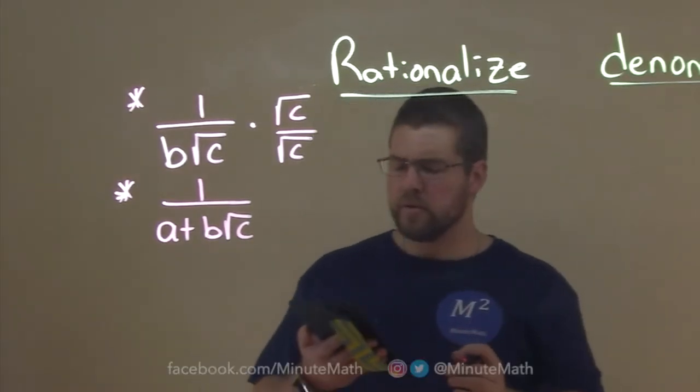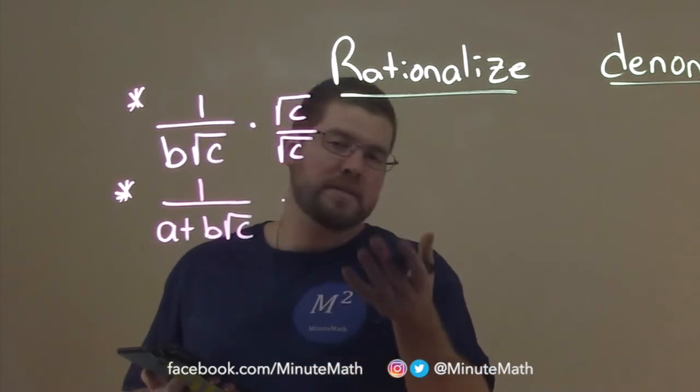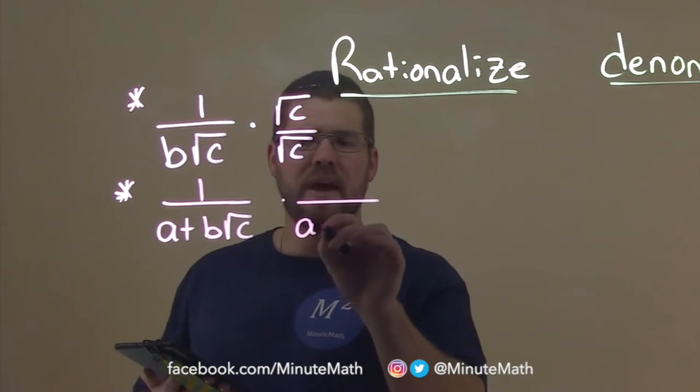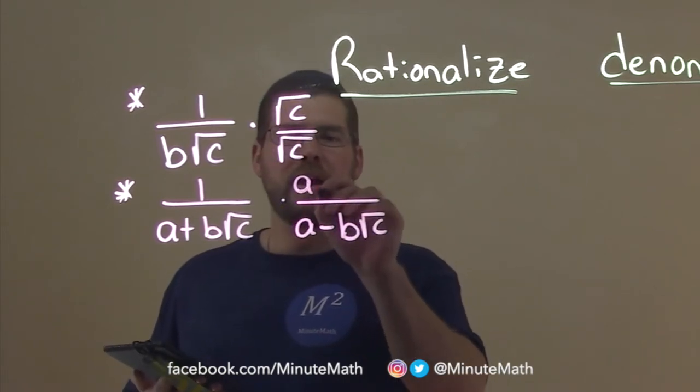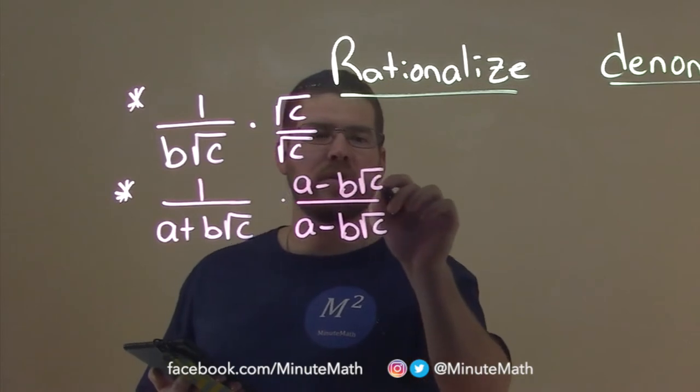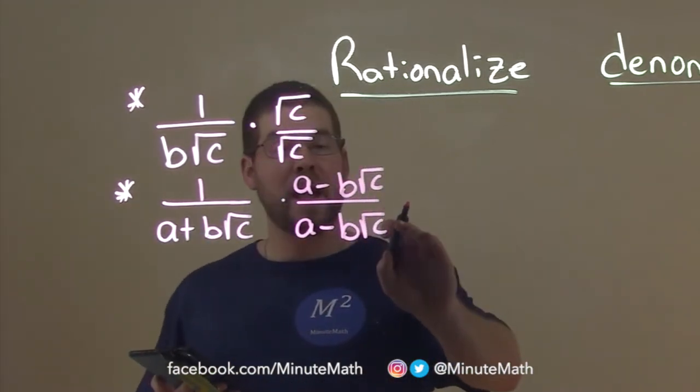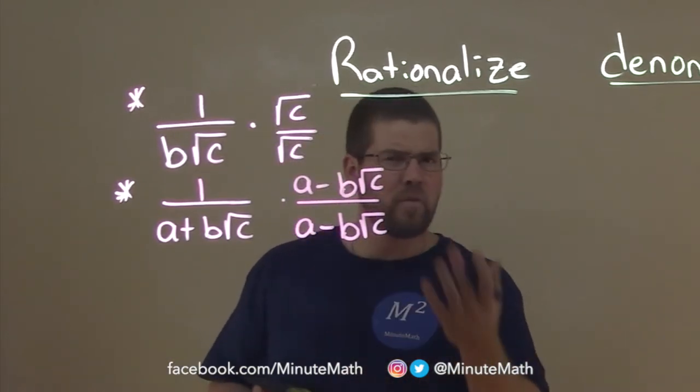But what we do is called the conjugate. We multiply the conjugate over itself to our expression. And so this conjugate is just a minus b square root of c. And we have a minus b square root of c. And make sure you multiply the number in the denominator, because remember this whole thing is equal to 1.